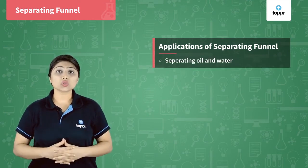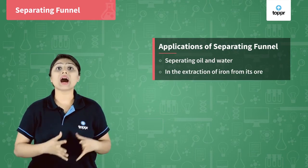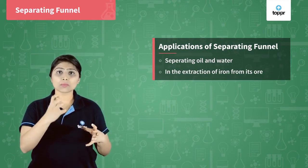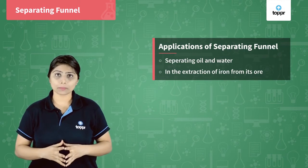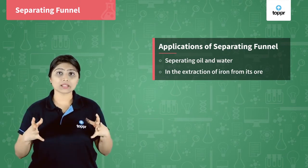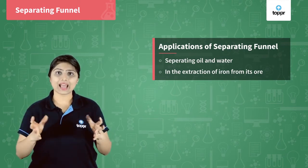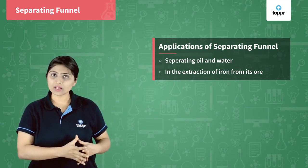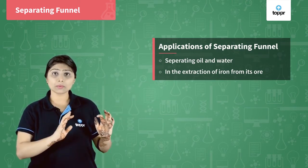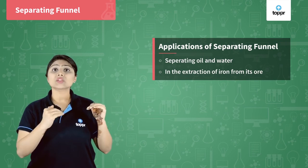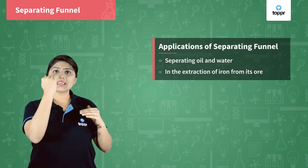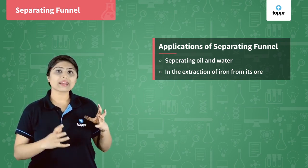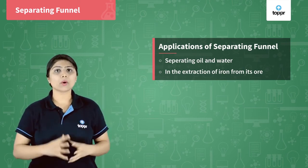The separating funnel is also used in the extraction of iron. When iron is extracted from its ore, it is in molten form and has a lot of impurities called slag. When the molten iron is put inside the separating funnel and left undisturbed, the slag, which is lighter, forms a layer on top of the molten iron, and the molten iron is then collected from below.